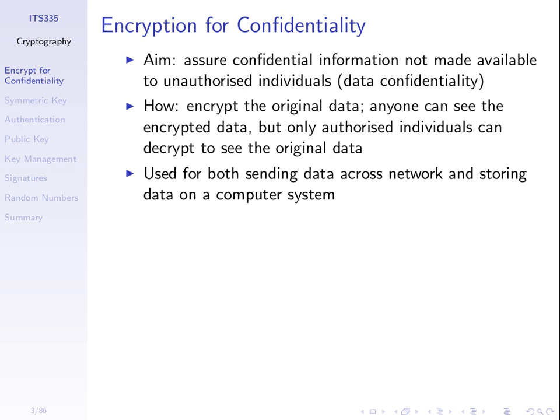Similarly, if I want to send data across a network, I encrypt it before I send it. Anyone who intercepts that message, like we did with Wi-Fi, can see the encrypted message but cannot decrypt it unless they have the key. The same approach is used whether the data is saved on a disk or sent across a network.